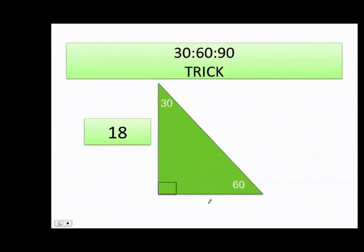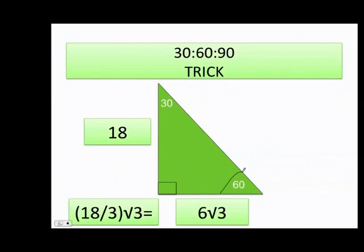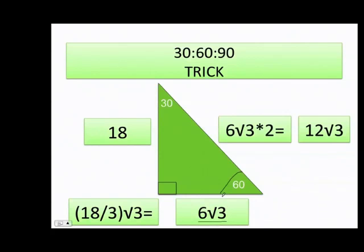The 60-degree side is a whole number, so I divide by 3 and add the square root of 3. That gives me 6 times the square root of 3. Finally, the hypotenuse is 2 times that value, which equals 12 times the square root of 3.